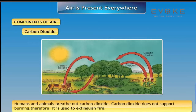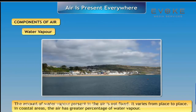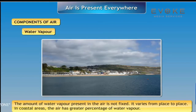Carbon dioxide does not support burning; therefore it is used to extinguish fire. Water vapor: the amount of water vapor present in the air is not fixed — it varies from place to place. In coastal areas, the